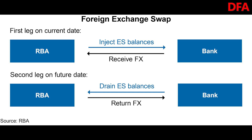The first leg of a foreign exchange swap, designed to inject ES balances into the system, involves the RBA providing ES balances to a bank and the bank providing collateral in the form of foreign currency to the RBA — typically US dollars, euros, or Japanese yen. The second leg, at the agreed future date, consists of the bank returning the ES balances and the RBA returning the foreign exchange.